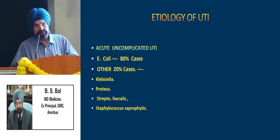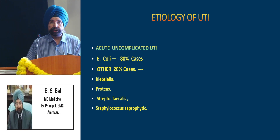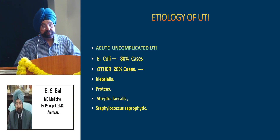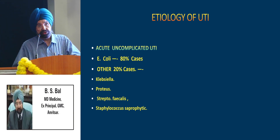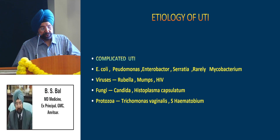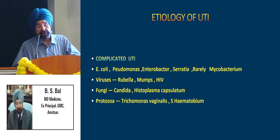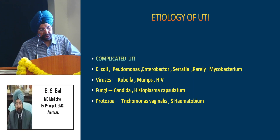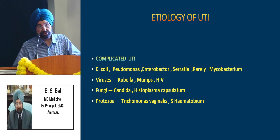Etiology of UTI — we divide this into uncomplicated and complicated UTI. In acute uncomplicated UTI, the most common organism is E. coli, causing almost 80% of cases. The other 20% are caused by Klebsiella, Proteus, Streptococcus faecalis, Staphylococcus, and Staphylococcus saprophyticus — the last one being more common with sexual intercourse. In complicated UTI, E. coli is again most common at about 60%, followed by Pseudomonas, Enterobacter, Serratia, and rarely Mycobacterium, Staph aureus, Salmonella. Certain viruses like rubella, mumps and HIV; fungi like Candida and Histoplasma capsulatum; and protozoa like Trichomonas vaginalis and Schistosoma haematobium can also cause complicated UTI.